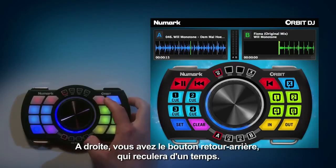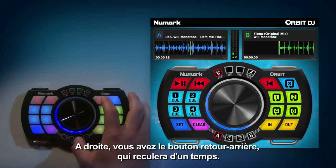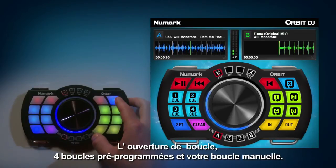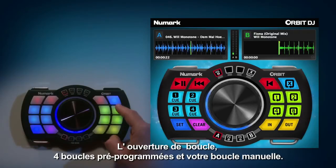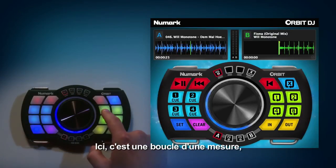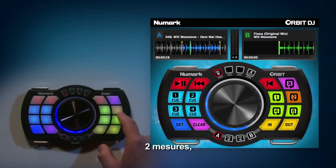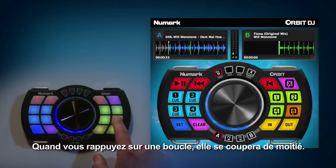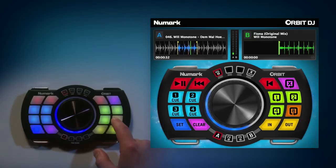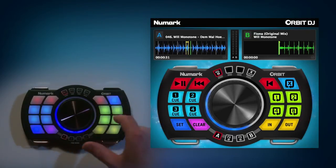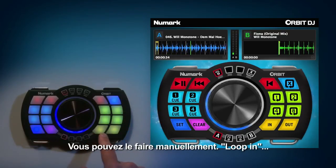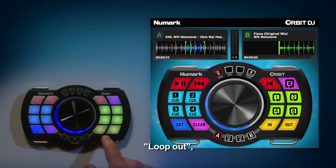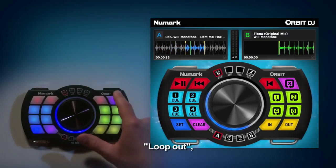On your right side here we have our back button which skips back just one beat, your loop out button, your four loop buttons and your manual loop buttons. Here we have increments of one bar, two bar, a four bar loop, as well as the eight bar. When you press the loop button again it will cut the loop in half. Then press the top button to get out of the loop. And we can do it manually — loop in, loop out — and exit the loop.